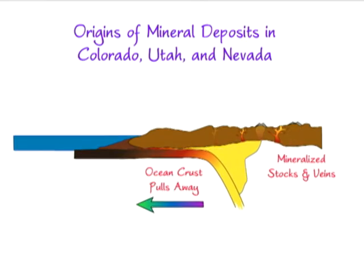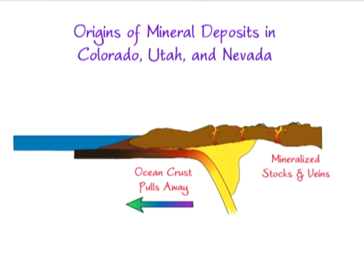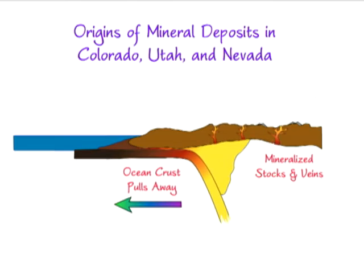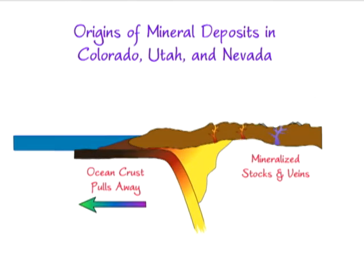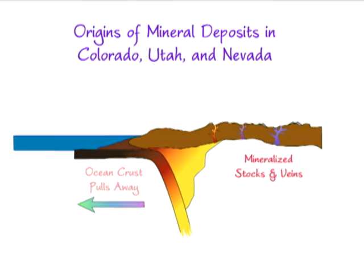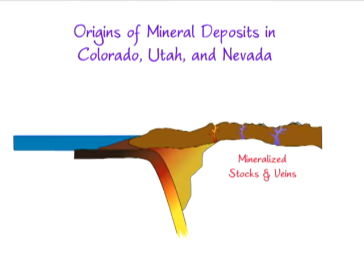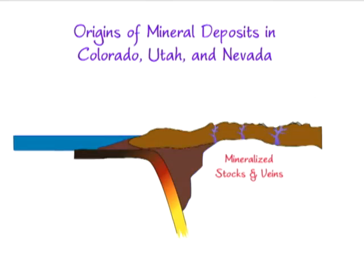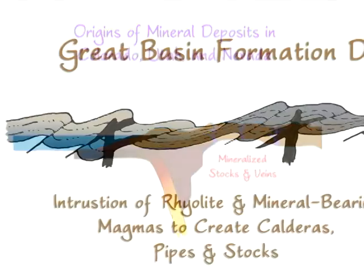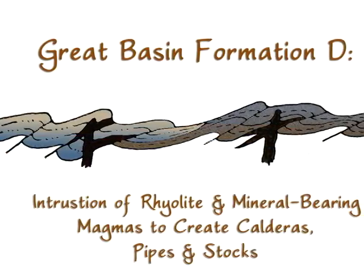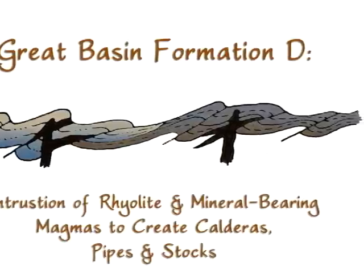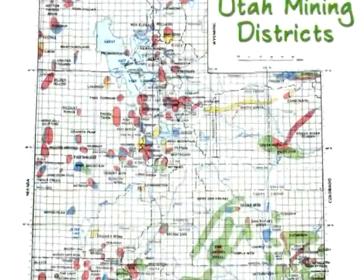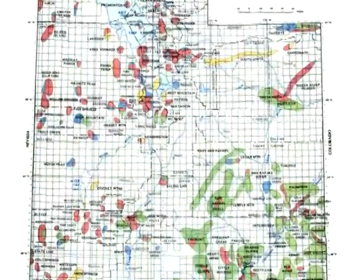A wave of volcanism traveled with it, moving back across Colorado, then Utah, then Nevada. Much of the mineralization found in these states occurred at this time, including the silver, copper, zinc, lead, manganese, and beryllium deposits of Utah.